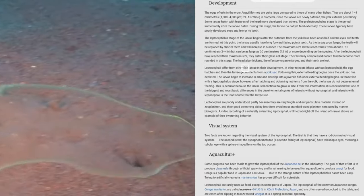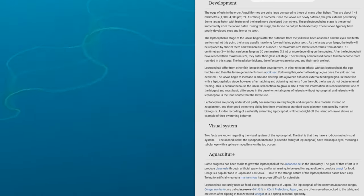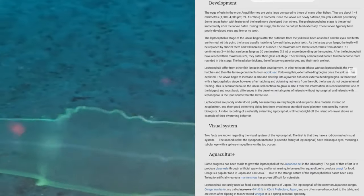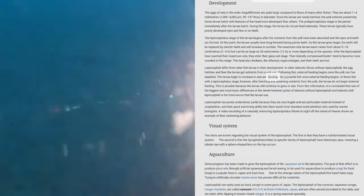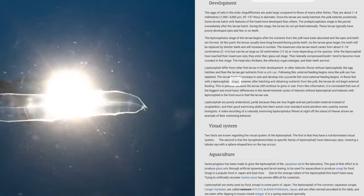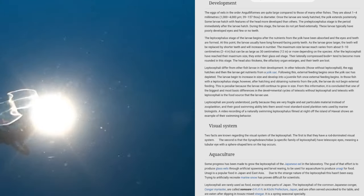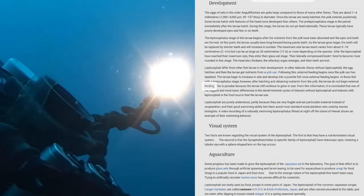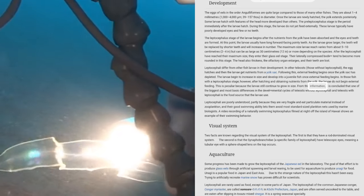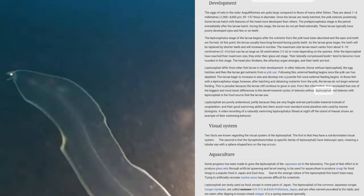Leptocephali differ from other fish larvae in their development. In other teleosts, those without leptocephali, the egg hatches and then the larvae get nutrients from a yolk sac. Following this, external feeding begins once the yolk sac has depleted. The larvae begin to increase in size and develop into a juvenile fish once external feeding begins. In those fish with a leptocephalus stage, however, after hatching and obtaining nutrients from the yolk, the larvae do not begin external feeding. This is peculiar because the larvae still continue to grow in size. From this information, it is concluded that one of the biggest and most basic differences in the developmental cycles of teleosts without leptocephali and teleosts with leptocephali is the food source that the larvae use.